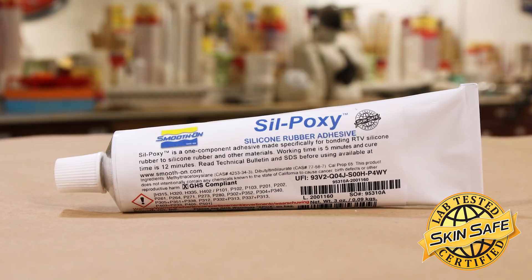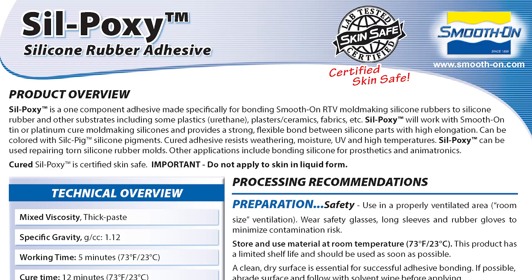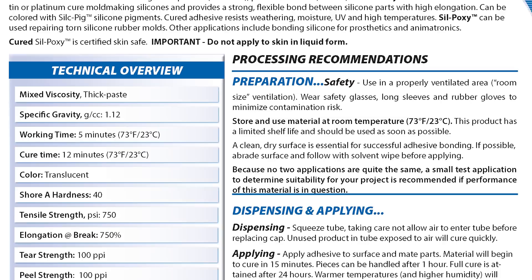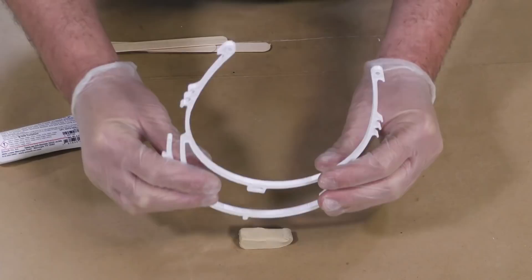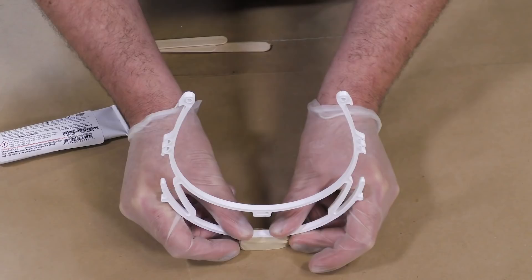To finish our project, we're going to add one more step, and that's the addition of the Silpoxy adhesive. This is a silicone adhesive to the rim that's going to be meeting the forehead of the person wearing this shield. This product has a work time of five minutes and a full cure of 12 minutes, so it's extremely fast. But more importantly, once the material is cured, it's actually skin safe, not so in the liquid state. Make sure you wear gloves when you're applying this product.